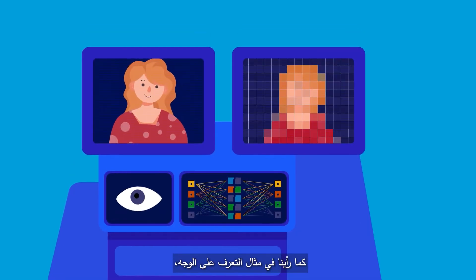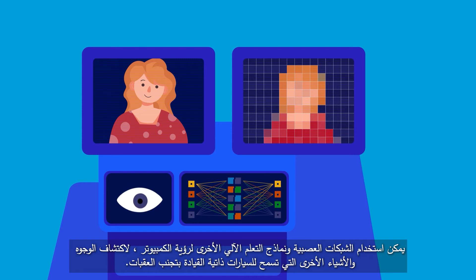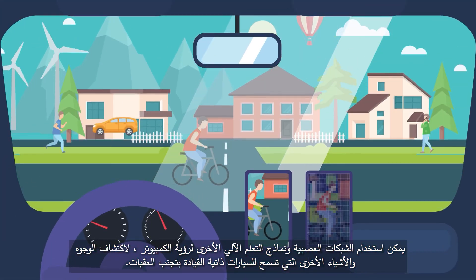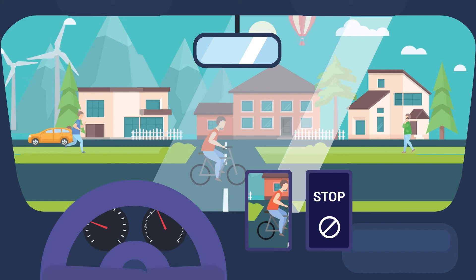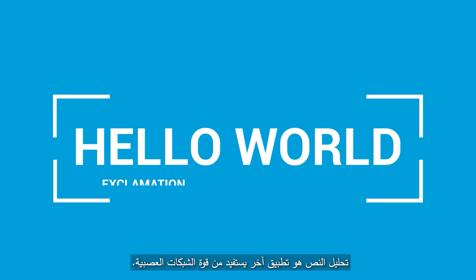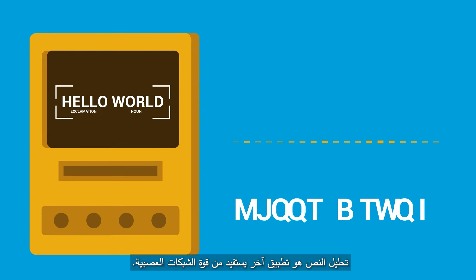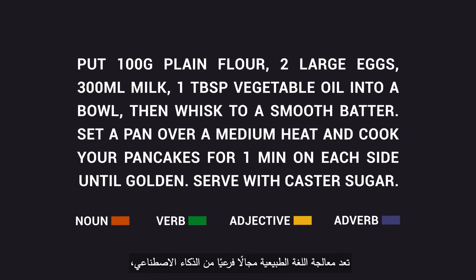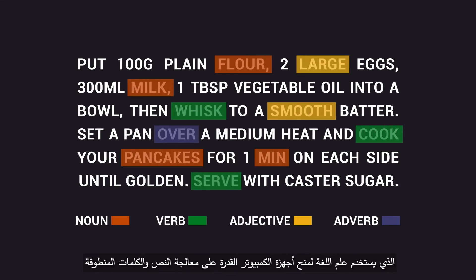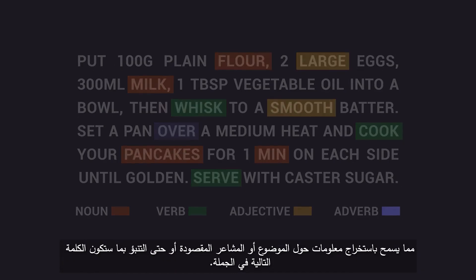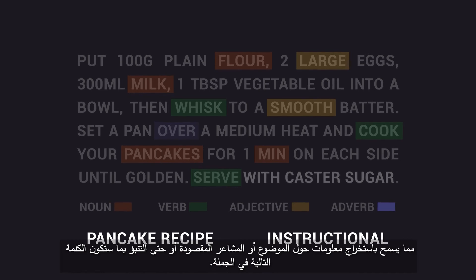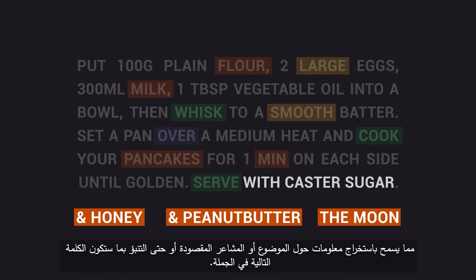As we have seen in the facial recognition example, neural networks and other machine learning models can be used for computer vision to detect faces and other objects, which will allow self-driving cars to avoid obstacles. Text analysis is another application that benefits from the power of neural networks. Natural language processing is a subfield of AI which uses linguistics to give computers the ability to process text and spoken words, allowing extraction of information about the topic, the intended sentiment, or even predicting the next word in a sentence.